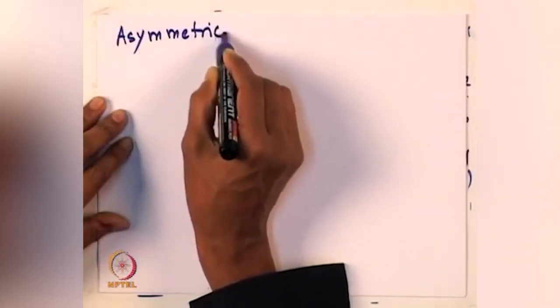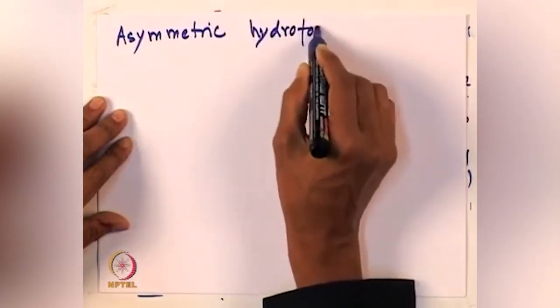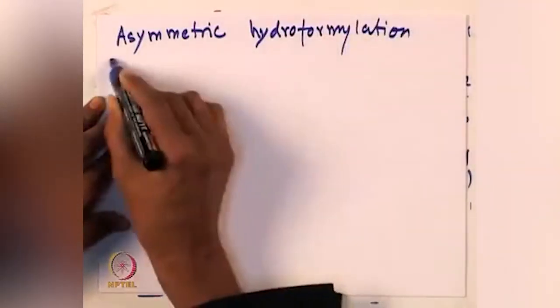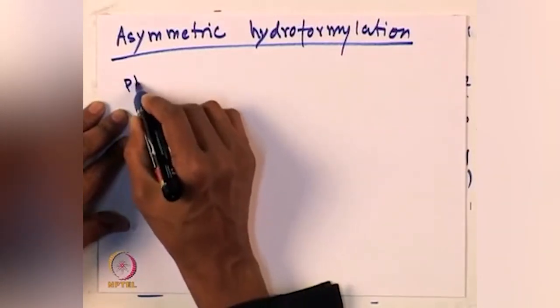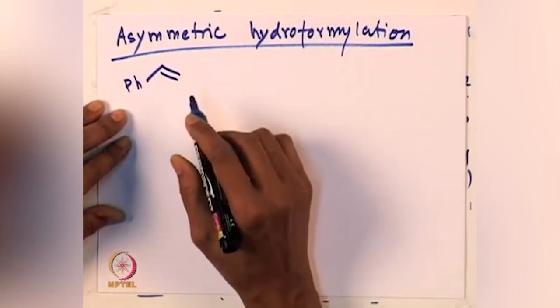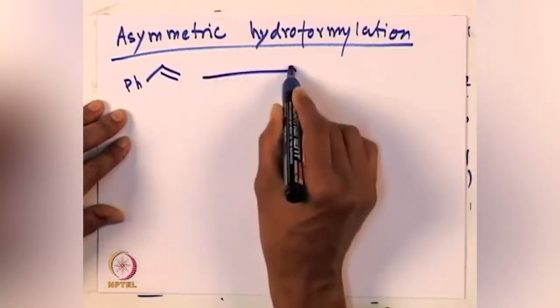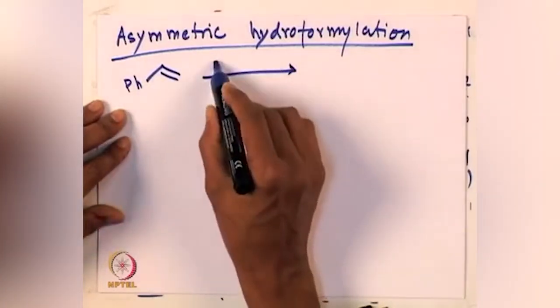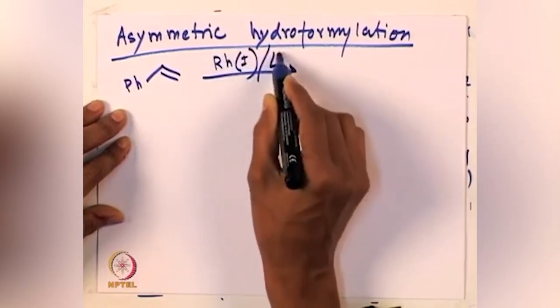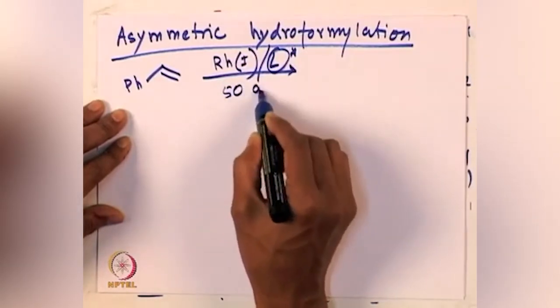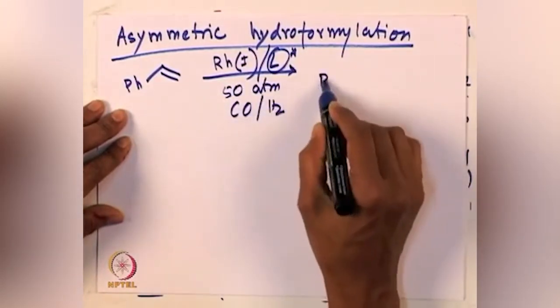Today we will mainly focus on one of the asymmetric cases and then hydrocarboxylation. Asymmetric hydroformylation is the one we will discuss in the beginning. Asymmetric hydroformylation reactions are very important and are done industrially on a huge scale. One of the components — if it is a linear product — there is no chance of getting any asymmetric one, especially if it is a terminal olefin. But if it is a styrene or a branch product is forming, then we can have a chiral ligand and get the product in asymmetric fashion.